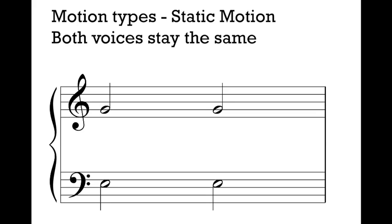Here's our last — and in some ways favorite — motion type: static motion. When both voices stay the exact same, when nobody moves, we have static motion. This is different from parallel motion. Parallel motion means both voices have to go somewhere by the same interval; when they both go nowhere, we call it static motion. Static motion is great — we can repeat things for as long as we want safely. When we are writing, we look to see how many times we can repeat notes, which tends to make things a bit easier.